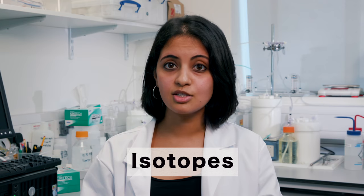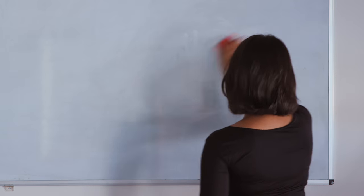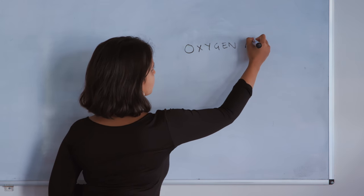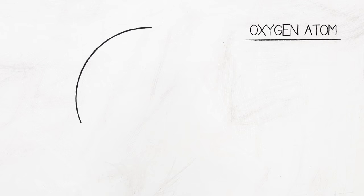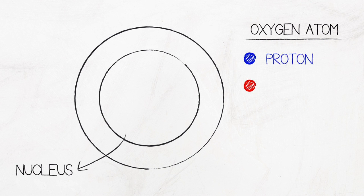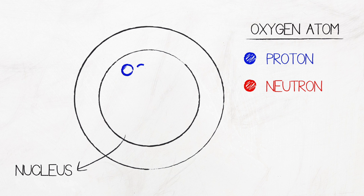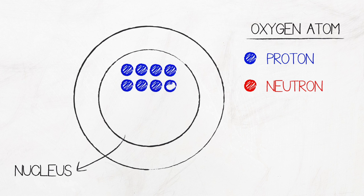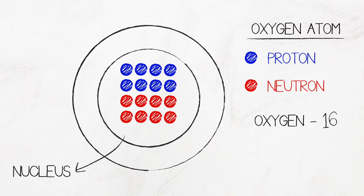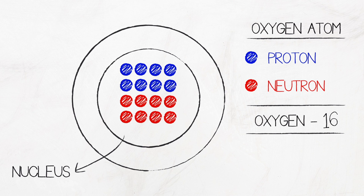So how can we find out about rainfall so far back in time? This is where atoms of oxygen with different masses, known as isotopes, come in. Basically nearly all the mass in an atom of an element is concentrated in the center part called a nucleus. All nuclei are made up of tiny particles called protons and neutrons. All oxygen atoms have eight protons in the nucleus. Most oxygen atoms have eight neutrons too, giving them 16 particles altogether — we call this oxygen-16.